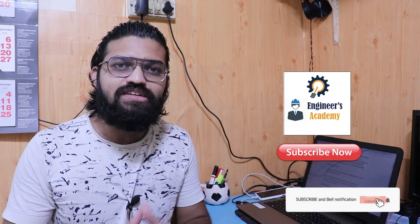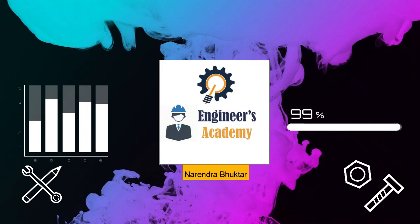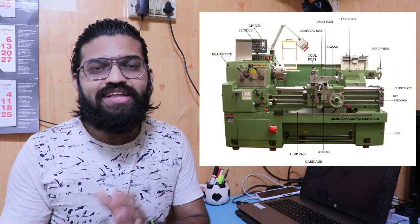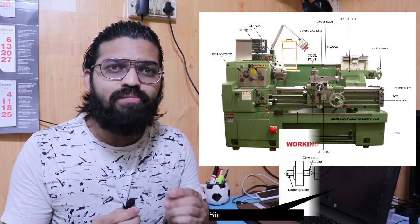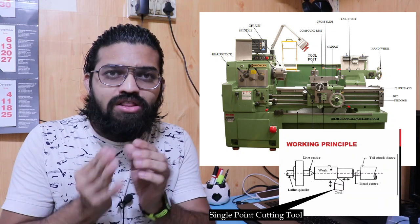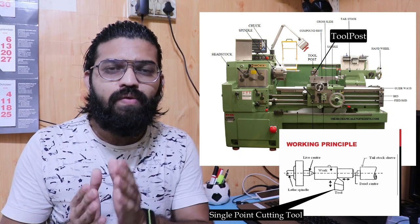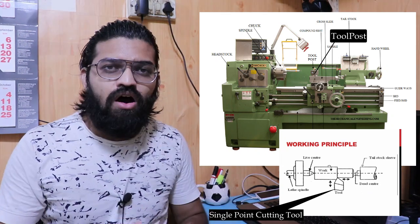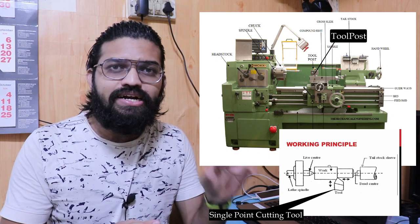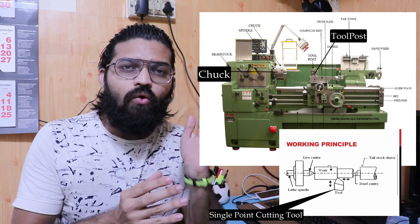Here you can see the industrial representation of the modern heavy-duty lathe machine. This particular lathe machine works on the basic principle of metal removal using a single-point cutting tool. This cutting tool is held rigidly at the tool post and is fed against the rotating workpiece.